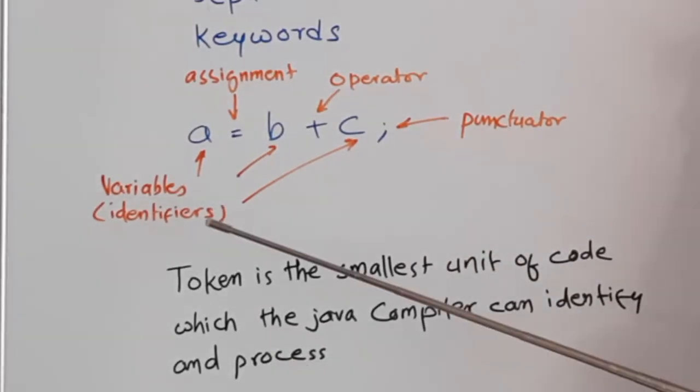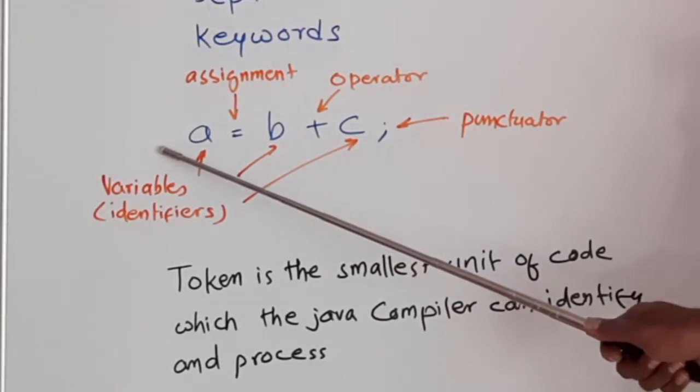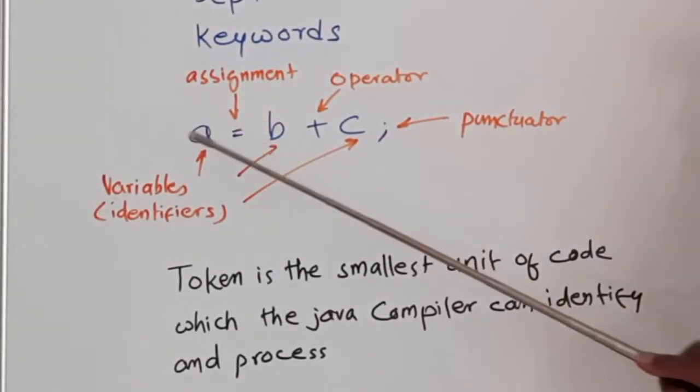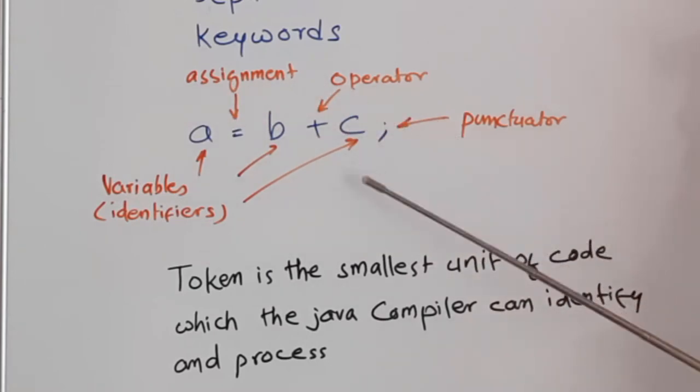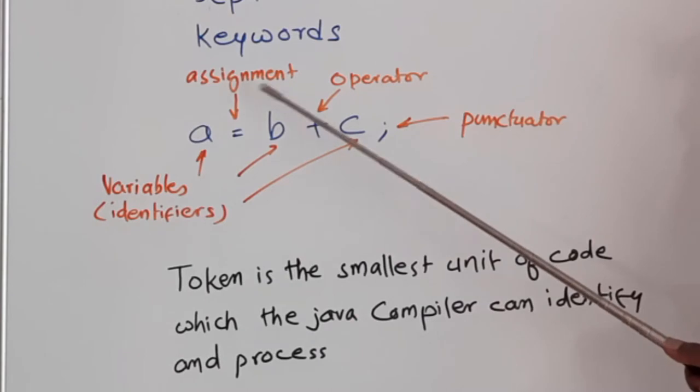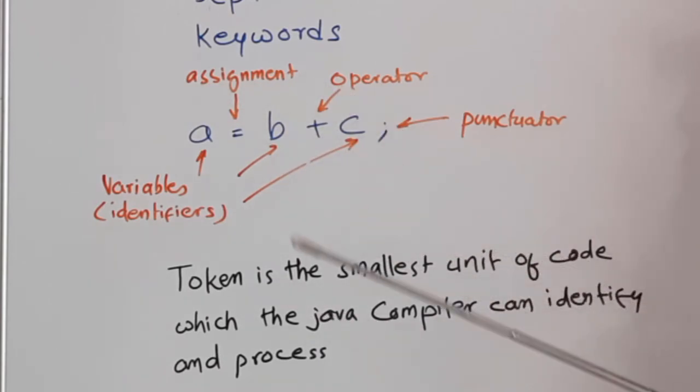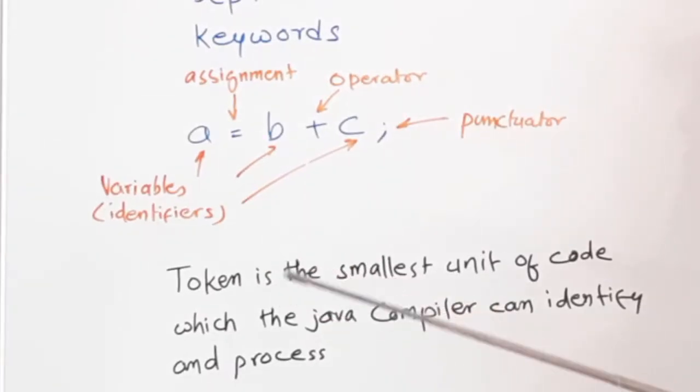A is equal to b plus c. Here, a is a variable or an identifier. A, b and c, all three are variables. Equals to is the assignment operator. Plus is the addition operator. And semicolon is a punctuation operator. So, these are all part of the character set of Java.